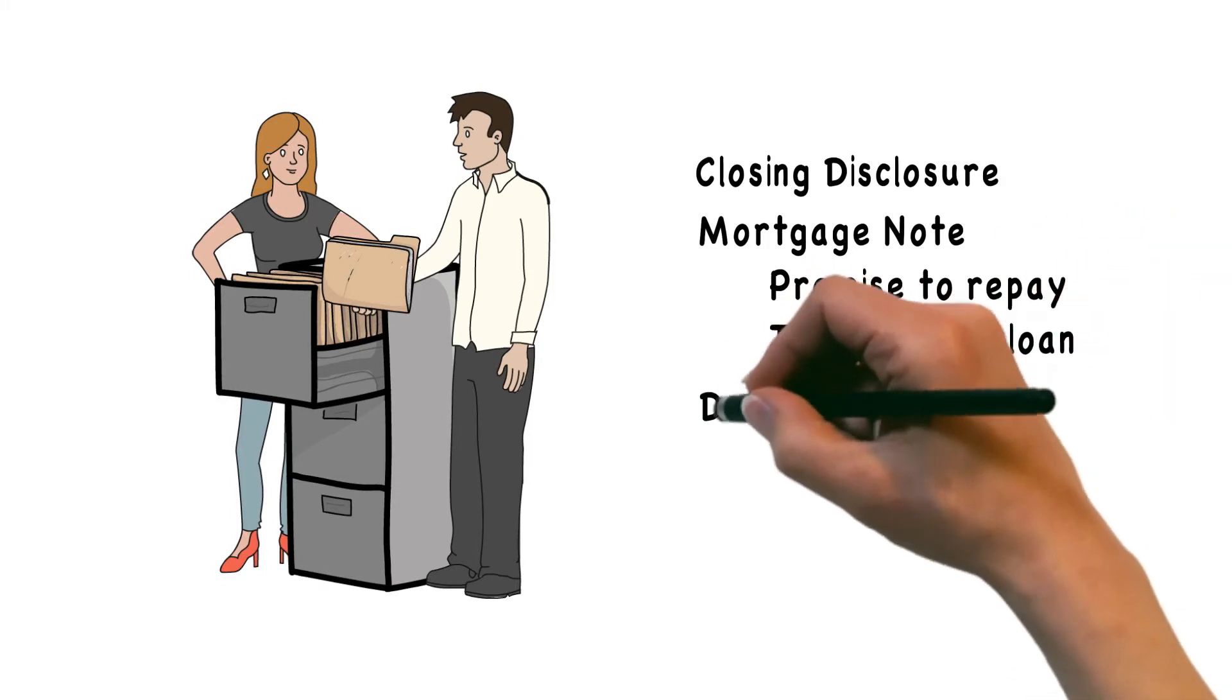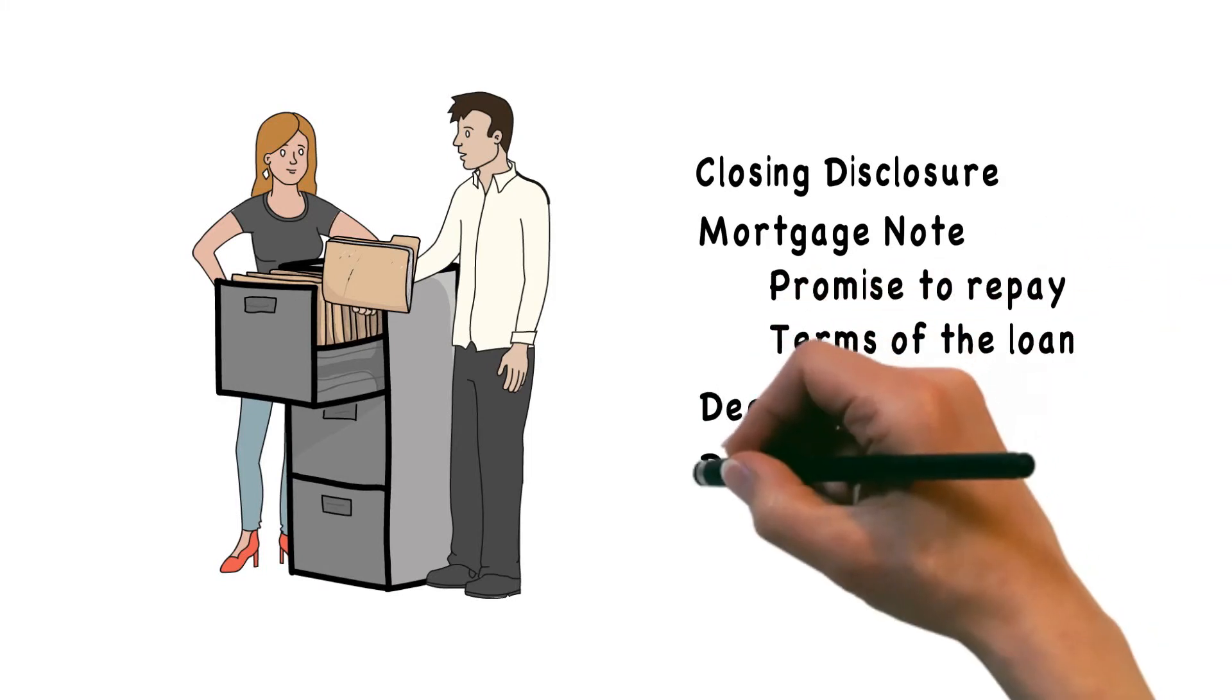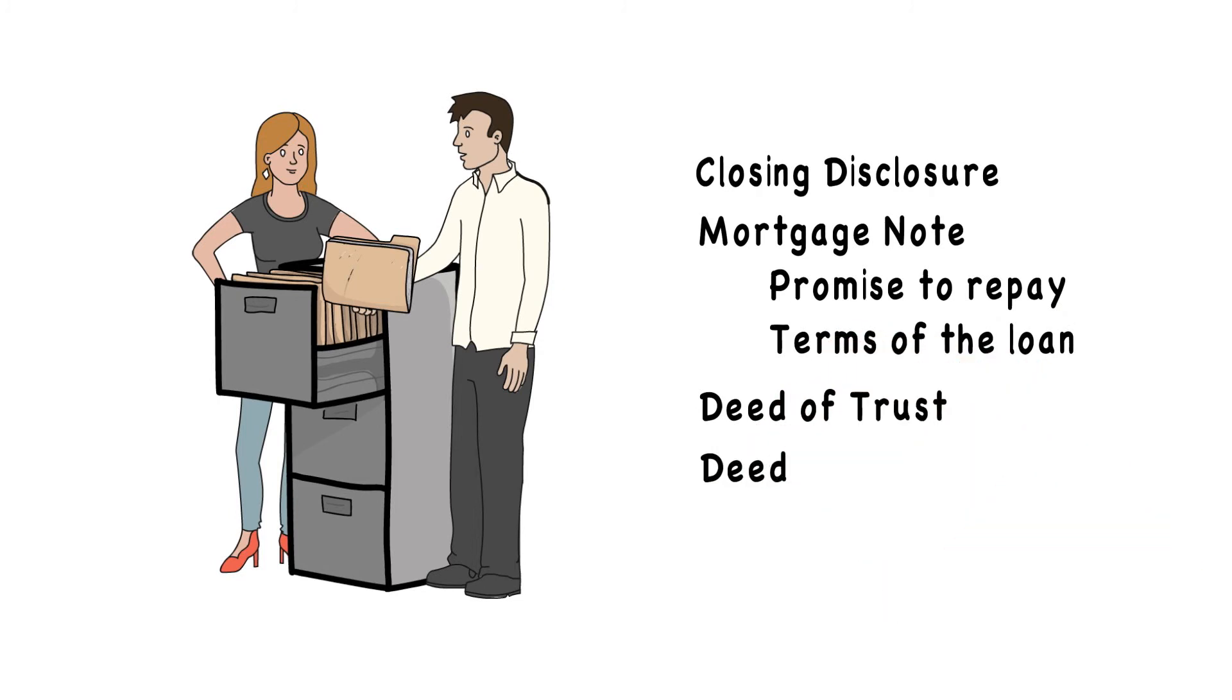The deed of trust gives your lender a claim against the house if you don't live up to the terms of the mortgage note, and the deed conveys ownership of the property from the seller to you as the new owner.